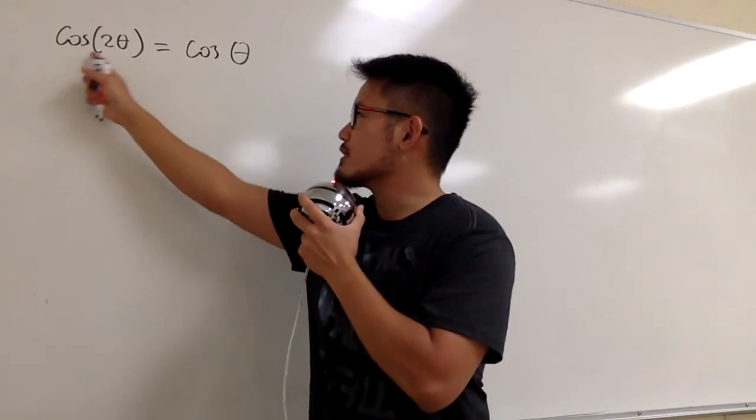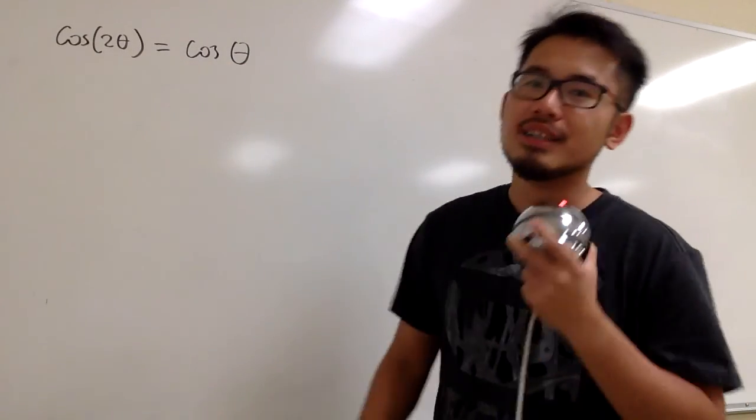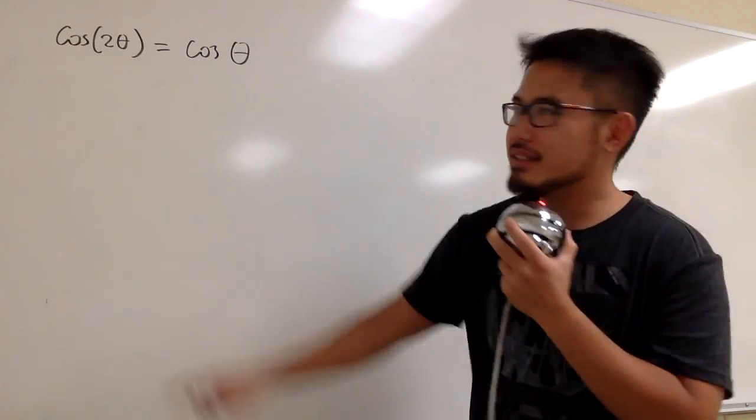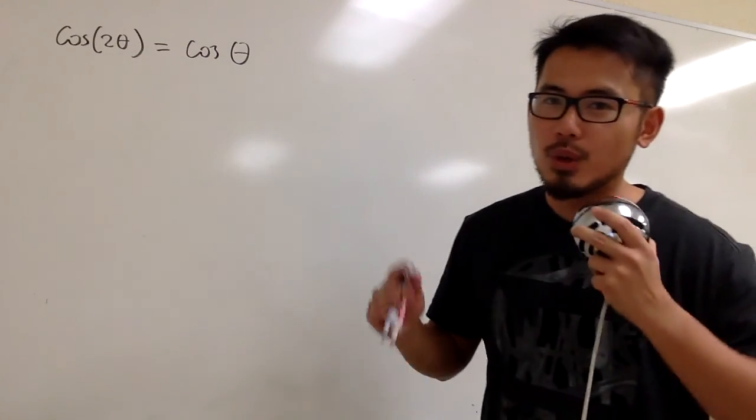Okay, let's solve this trig equation. We have cosine 2θ is equal to cosine θ. So what's the trouble? You should tell me that the angles are different, right? This is 2θ, this is only θ. So what should we do?